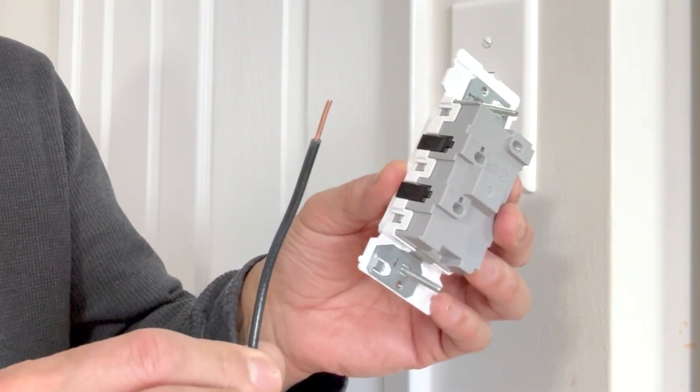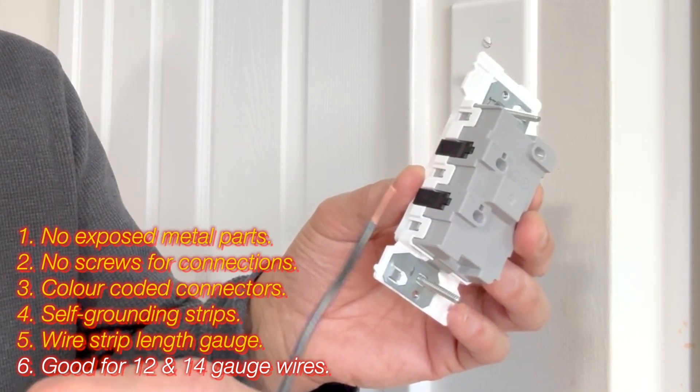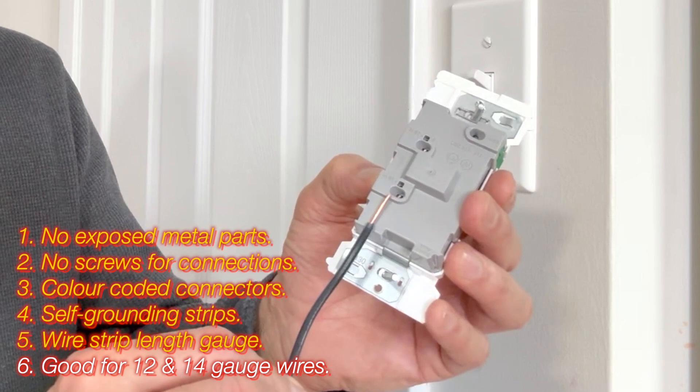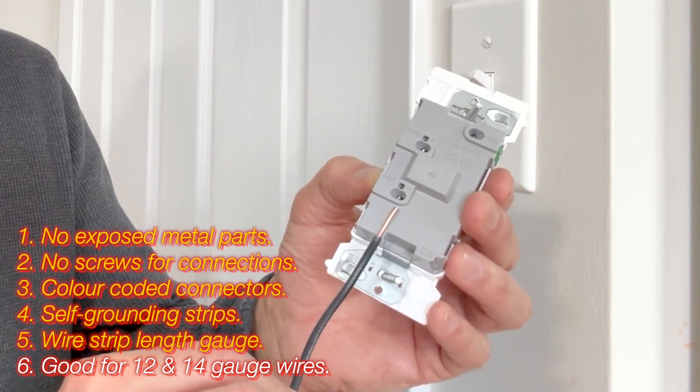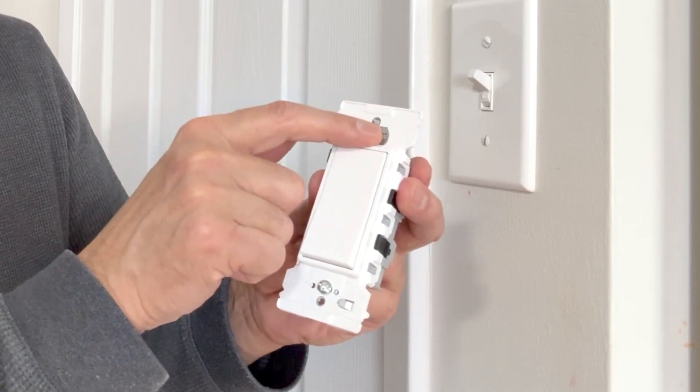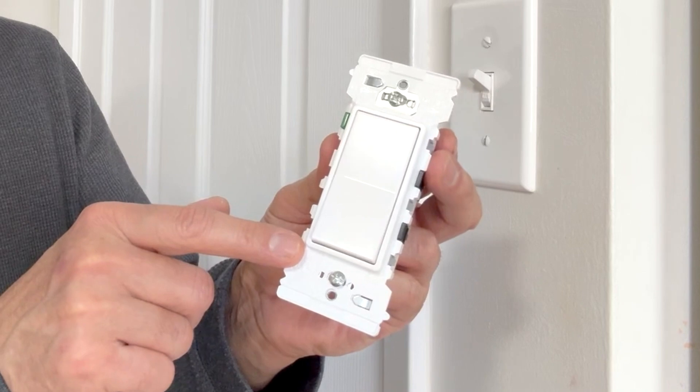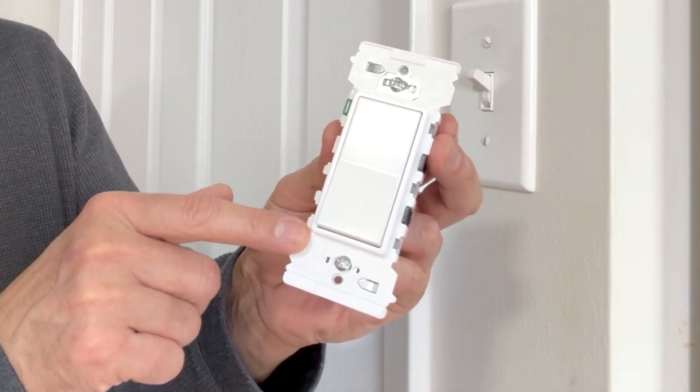This wire that I am using is a 14 gauge wire but this switch can also take a 12 gauge wire. So these holes are good for 14 gauge as well as 12 gauge wire. This switch is for AC only rated 120 volts 15 amps. If you see the marking upside down then you are installing the switch upside down.